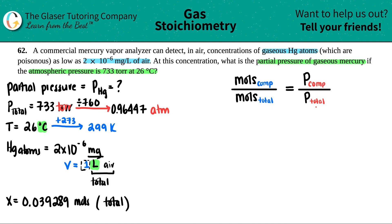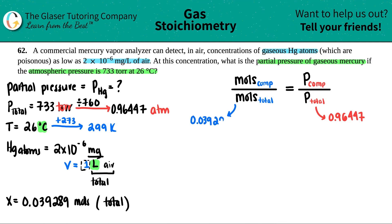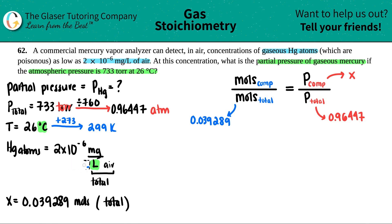So we know the total pressure is 0.96447 and the total moles is 0.039289. The partial pressure of Hg is what we're solving for — that's x. To find it, we need the moles of Hg, which comes from the concentration they gave us: 2 × 10⁻⁶ mg/L. We need to convert that to moles.